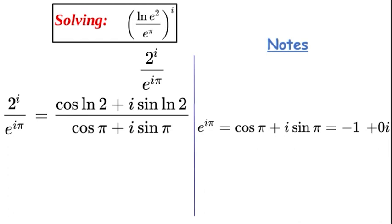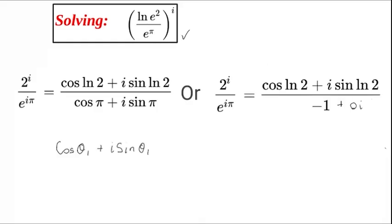All right, so at this stage now we're going to try to evaluate it or maybe simplify. Taking cos of θ₁ plus i sine θ₁ and placing it over cos of θ₂ plus i sine θ₂ will give us the difference of the angle. So cos of θ₁ minus the lower angle.